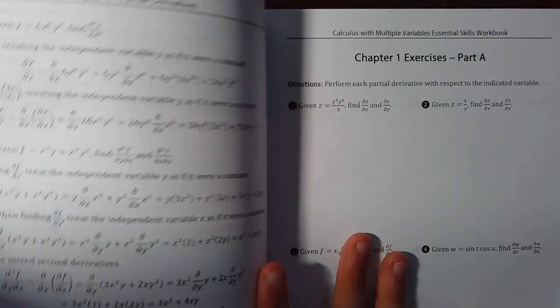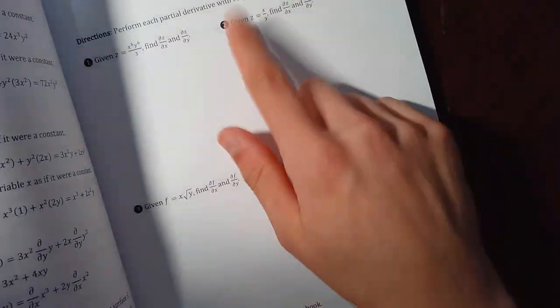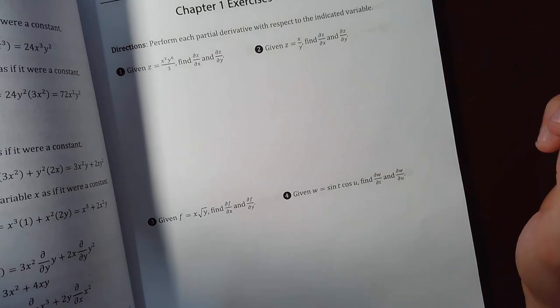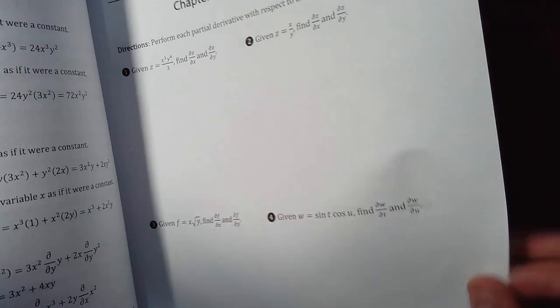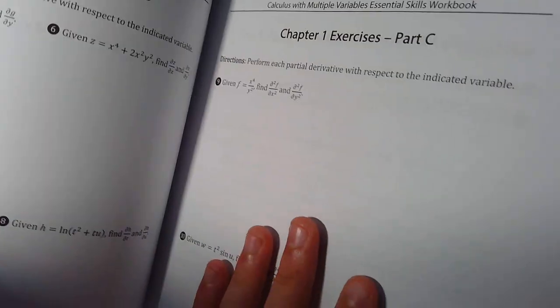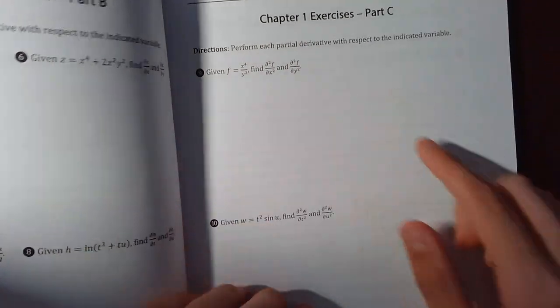It gives a couple examples on the second page as well. And then it gives you questions. They've actually given you space to write the answers in, but I wouldn't recommend that. I'd do it just on a bit of paper. It's got tons of exercises. Then they've got one for finding the second partial derivative.